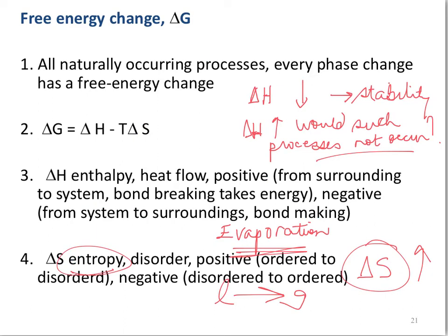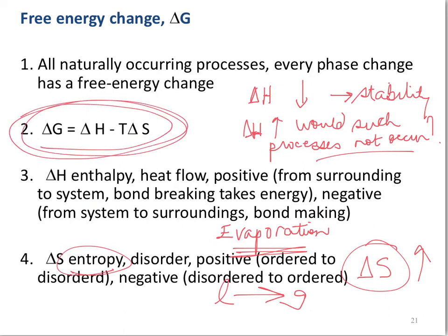An increase in entropy is always favorable for natural processes. We'll discuss this in more detail in chapter 18. Both entropy and enthalpy can be connected using the Gibbs free energy relationship: ΔG = ΔH − TΔS. If you know the values of ΔH and ΔS, you can calculate ΔG at a given temperature. For all naturally occurring (spontaneous) processes, ΔG must be negative.